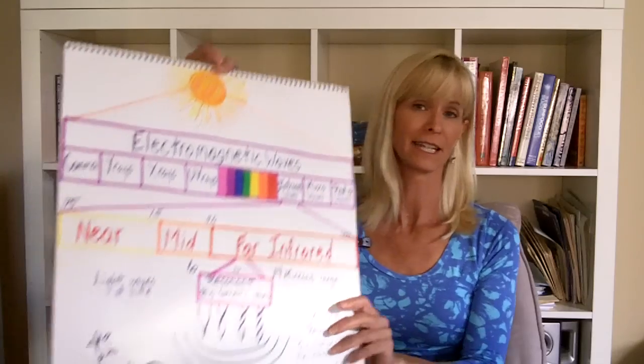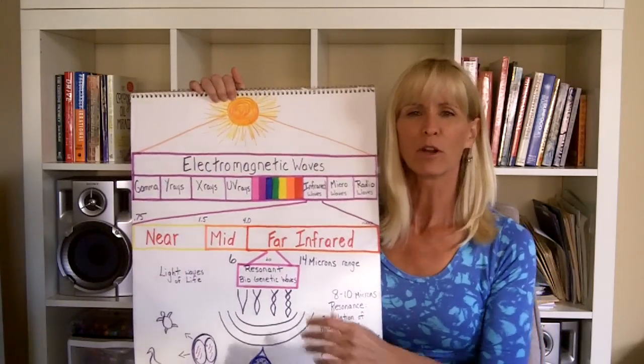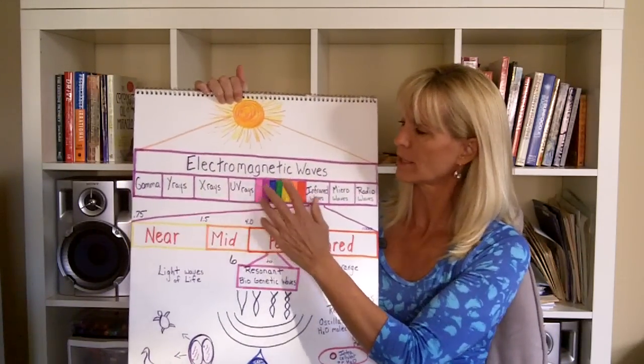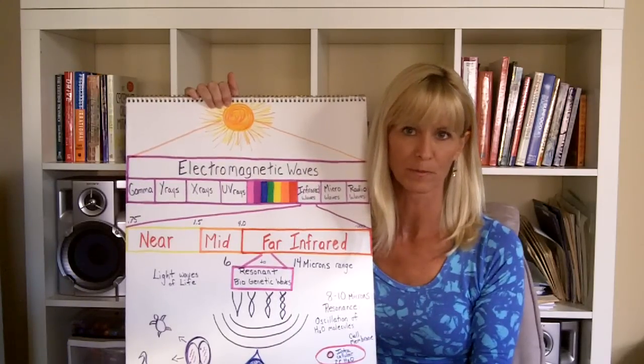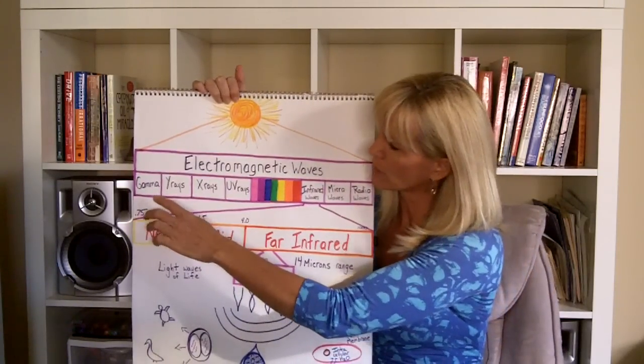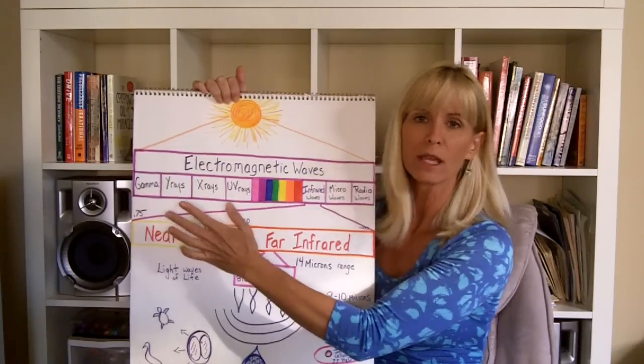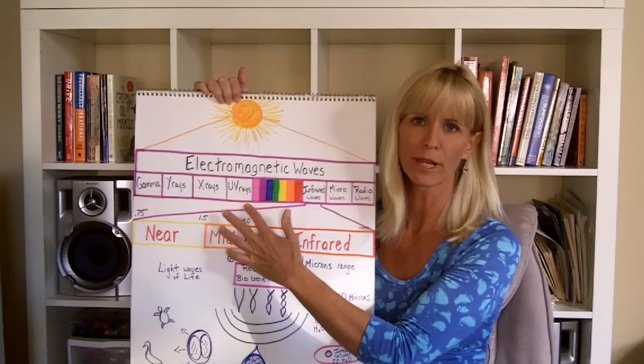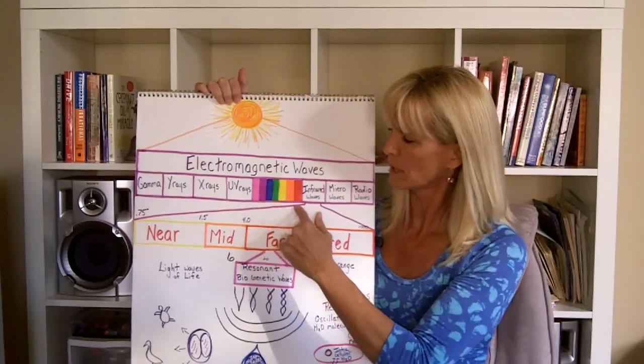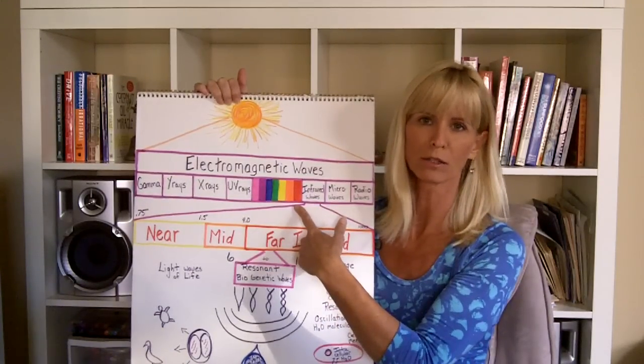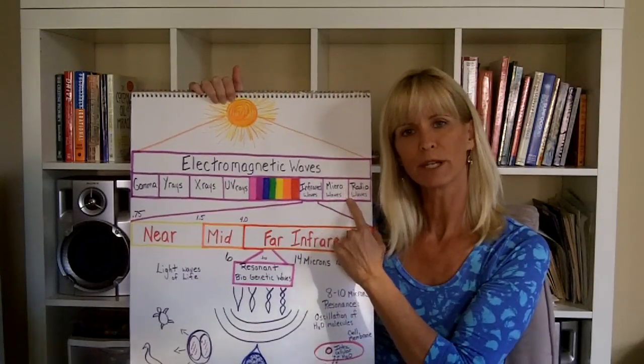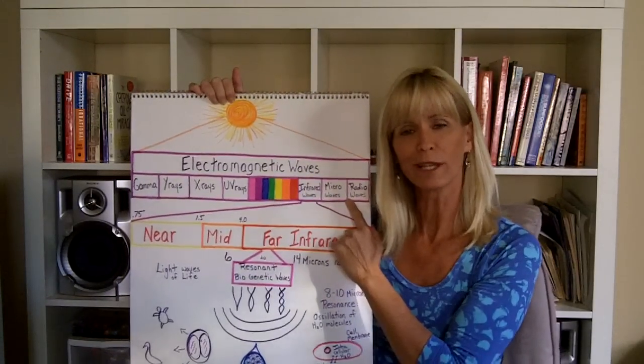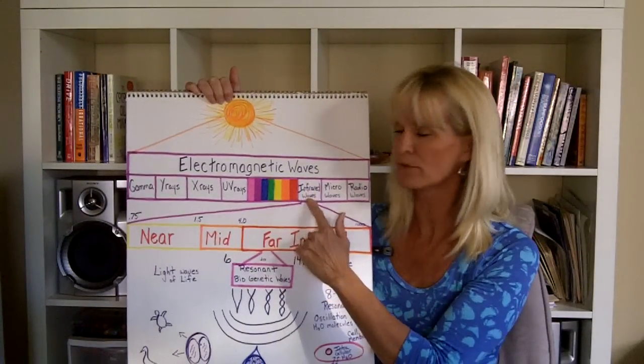So let's start with the basics. The handy dandy chart here. Far Infrared is an aspect of the electromagnetic spectrum of radiation that's present in our universe. Within that range you're going to see gamma rays, x-rays, UV rays, the visible light spectrum with your rainbow colors, and then we've got infrared, microwave and radio waves. What we want to focus on today are the infrared waves.